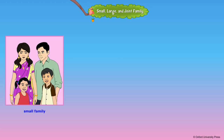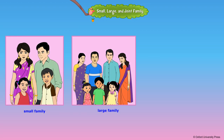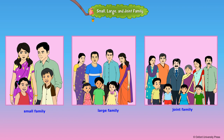There are different types of families. The three types of families are small family, large family, and joint family. Father, mother, and one or two children make a small family.